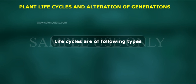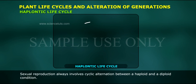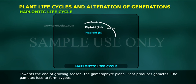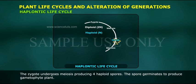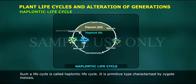Life cycles are of the following types. 1. Haplontic Life Cycle: Sexual reproduction always involves cyclic alternation between a haploid and a diploid condition. Towards the end of the growing season, the gametophyte plant produces gametes. The gametes fuse to form a zygote. The zygote undergoes meiosis, producing four haploid spores. The spore germinates to produce the gametophyte plant. There is alternation between a prolonged haploid vegetative gametophyte plant and a single-celled diploid zygote. Such a life cycle is called the haplontic life cycle. It is a primitive type, characterized by zygote meiosis.